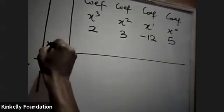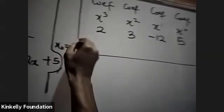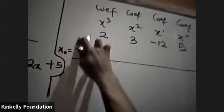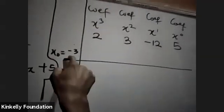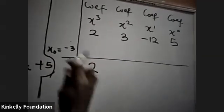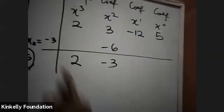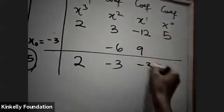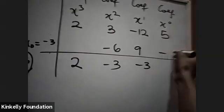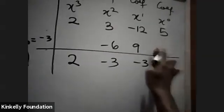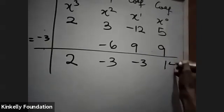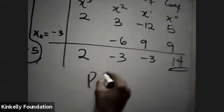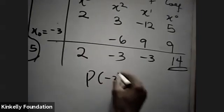At s₀ equal to minus 3. You bring down the first one: 2. This times this is minus 6. This plus this is positive 9. This times this is positive 9. This plus this is positive 14. So the answer, p(minus 3), is equal to 14.